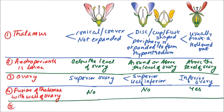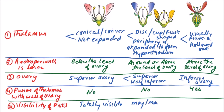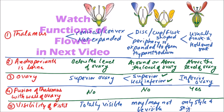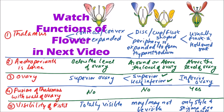Next is the visibility of the pistil. In the hypogynous condition, the pistil is totally visible because a superior ovary is present. In perigyny, the pistil may or may not be visible — if a superior ovary is present the pistil is visible, but in the case of a half inferior ovary it will not be completely visible. In the epigynous condition, with an inferior ovary, only the style and stigma are visible.